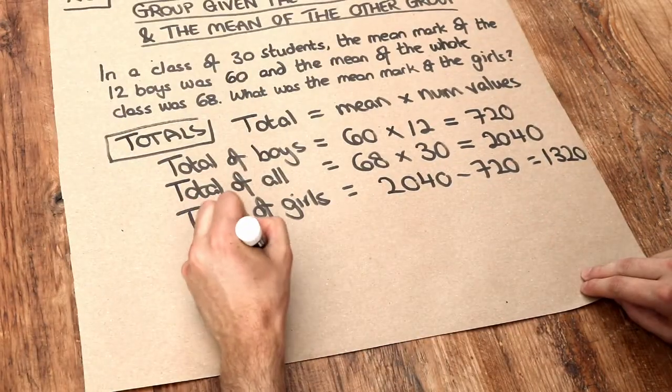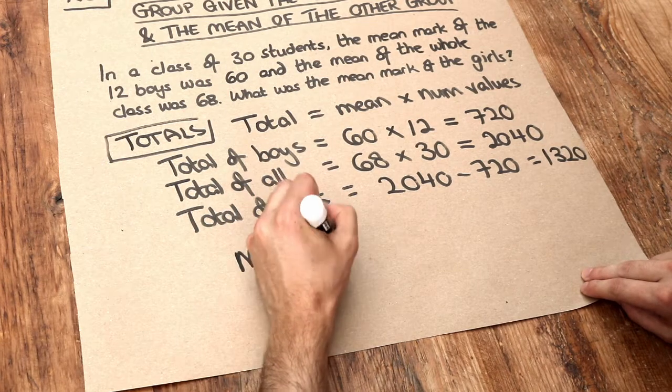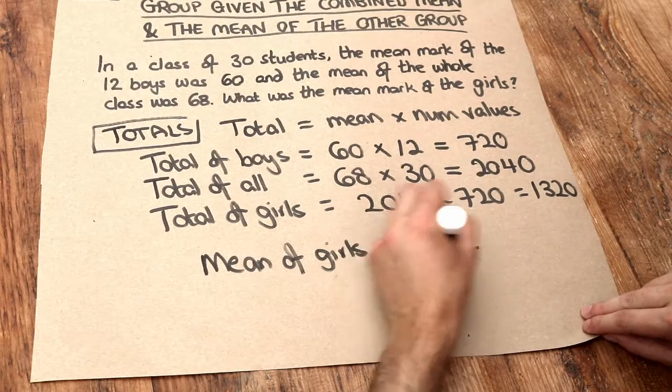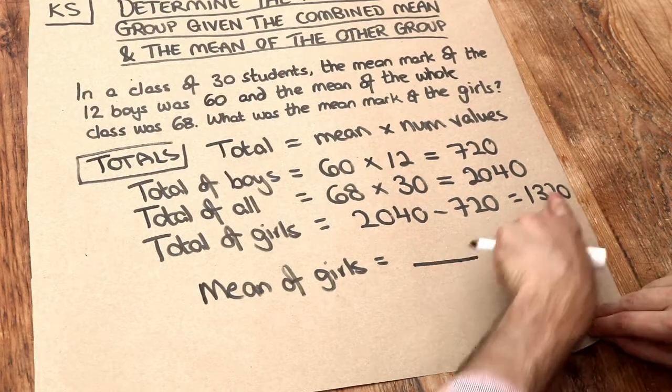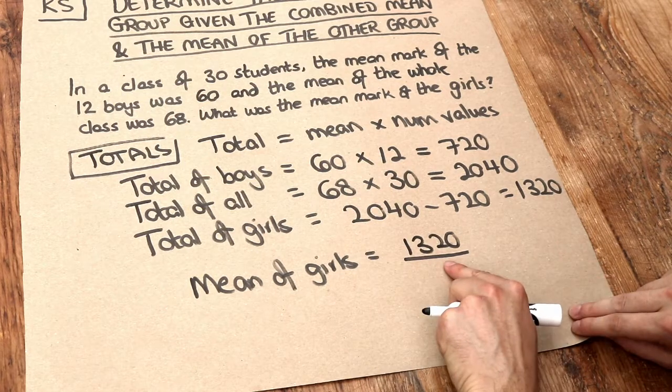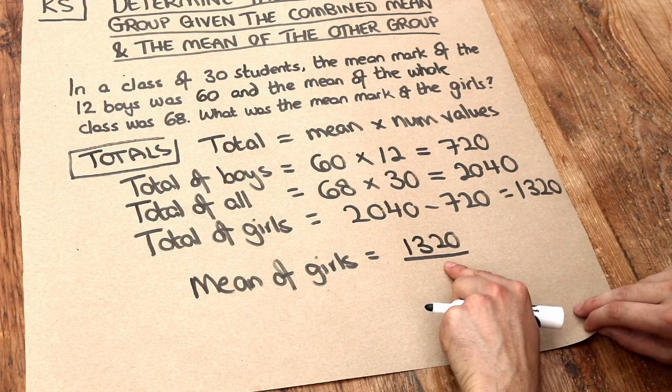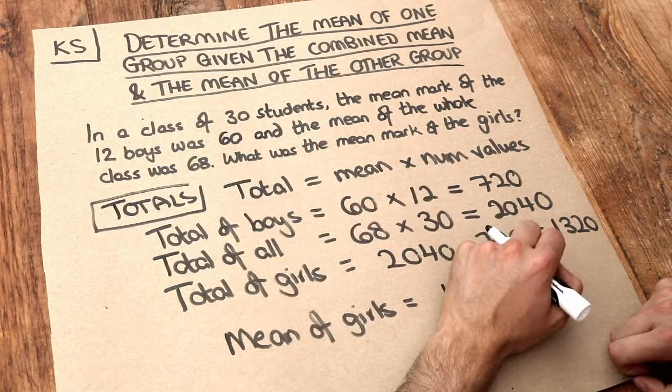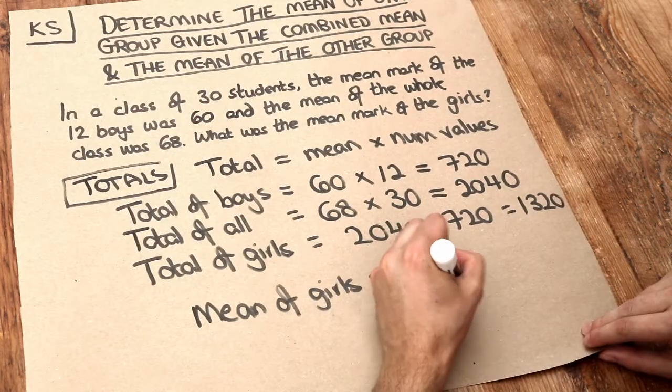Now we can work out the mean of the girls. The mean mark of the girls is the total mark of the girls, which was 1,320, divided by how many girls there were. If 12 of the 30 students were boys, then 18 must have been girls.